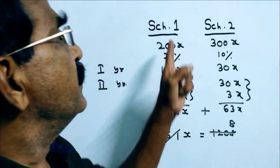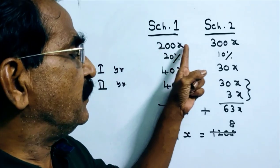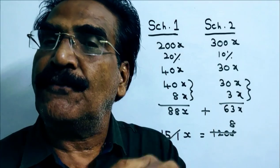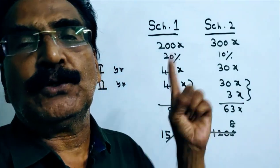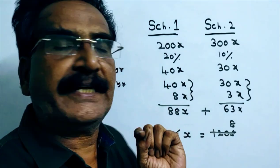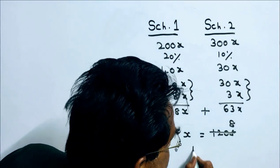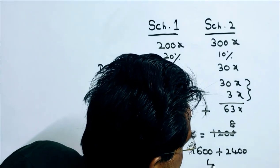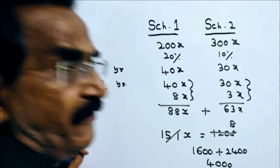X is equal to 8 means he invested 200 into 8, 1600 in scheme 1, 300 into 8, 2400 in scheme 2. So total amount invested, 1600 plus 2400, total invested amount is 4000 rupees friends.